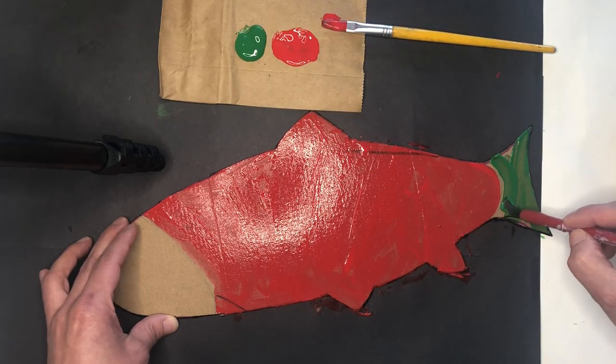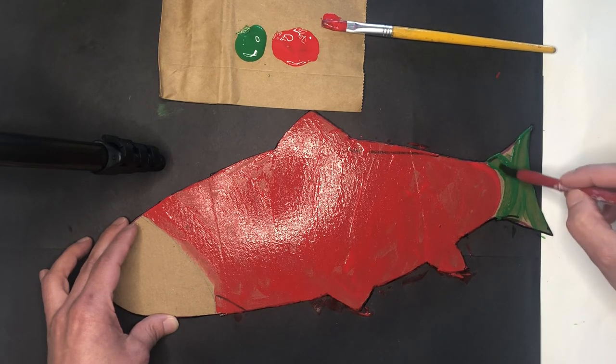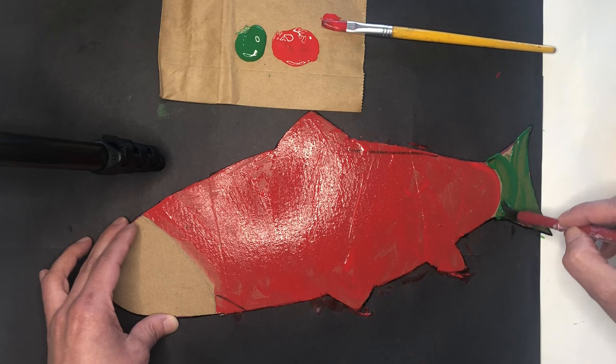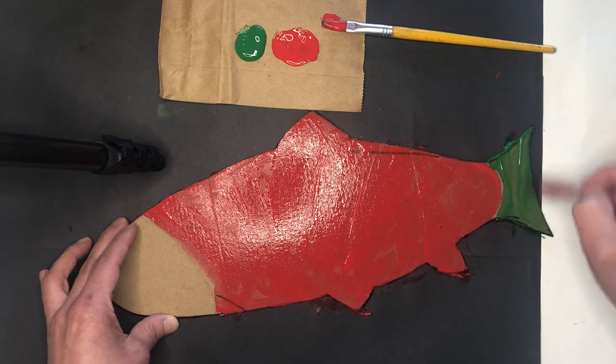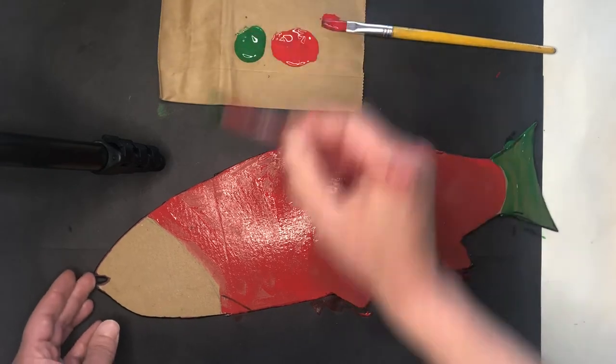Be real careful as you get closer to your red paint because it's still wet. You don't want to mix the two colors, so just go real slowly around that. And then the head.